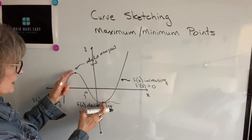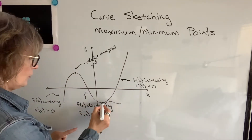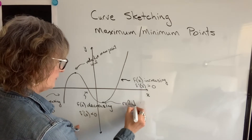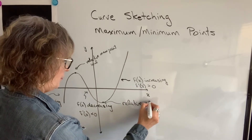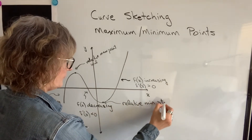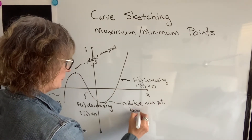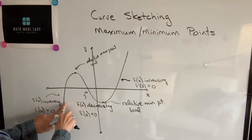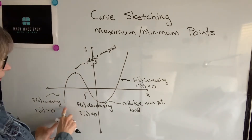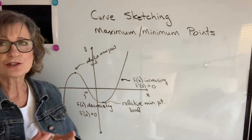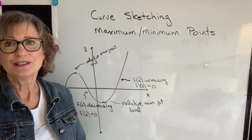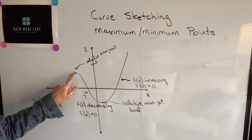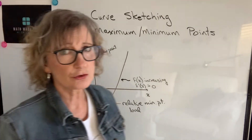But in this local area, or relative to other points, it would be considered the maximum. When our function goes from decreasing to increasing, it will go through what's called a minimum point — and again, this is a relative minimum point, or a local minimum point — because there are y values or function values that are less than it on this graph, but in terms of the other points around it, it's considered a minimum point. So those points become very important in drawing your graph.